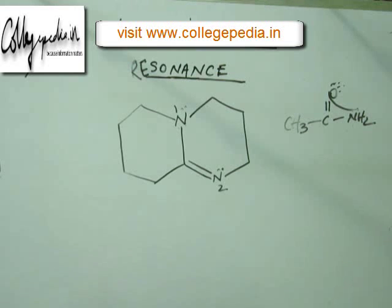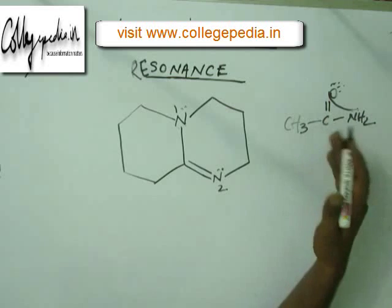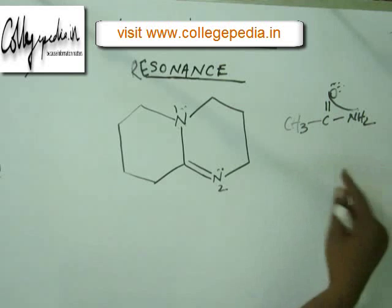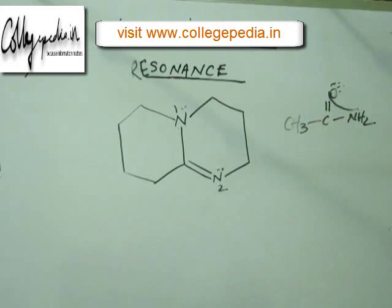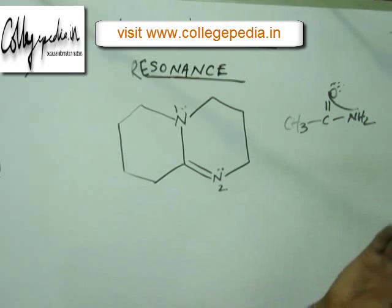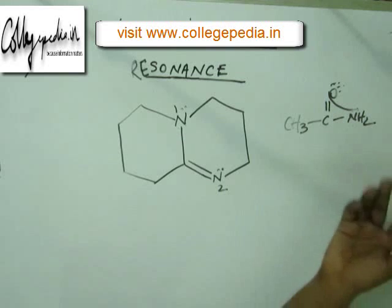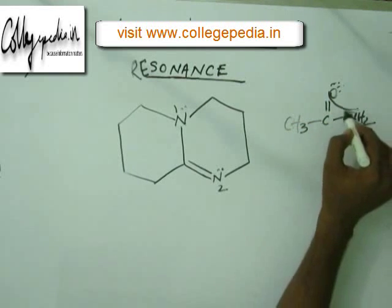Based on electronegativity, the lone pair of oxygen is more tightly held than nitrogen because oxygen is more electronegative. So in that case H+ should have gone to nitrogen, because nitrogen being less electronegative will offer its lone pair to H+ to a greater extent than oxygen. But the thing is, it is not electronegativity — it is a completely different thing. We were thinking the lone pair to be on nitrogen and then applying the concept of electronegativity, but the lone pair of nitrogen is not in the orbital of nitrogen.